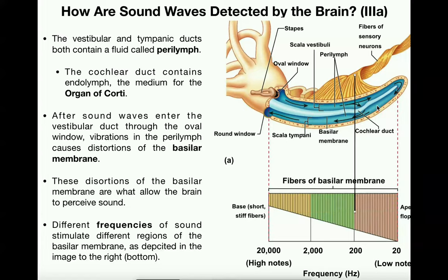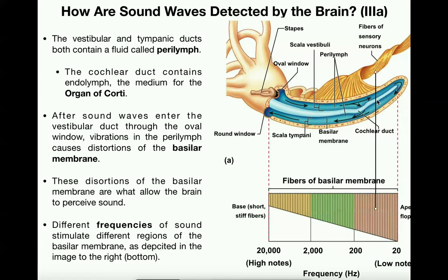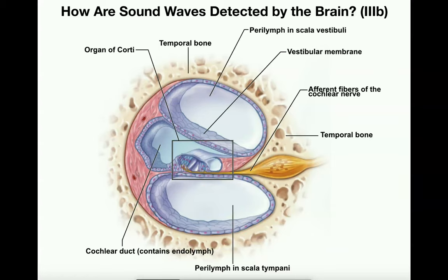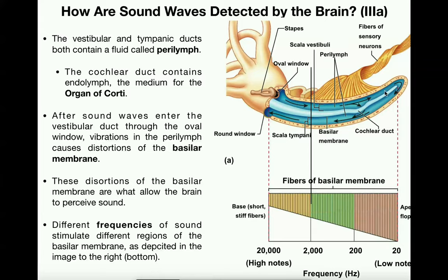A sound with a very low frequency activates a different region of the basilar membrane — detecting a very low note. Now, what we're going to look at on the next slide is essentially a cross-section of the cochlea. The best way to think about it: imagine the cochlea was a long dill pickle. If you take a knife and slice it — one-third on one side, two-thirds on the other — and look at the circle from the side, that cross-section is what we're examining.